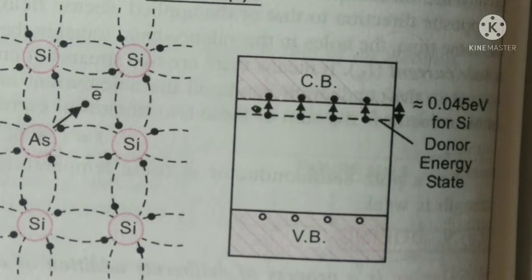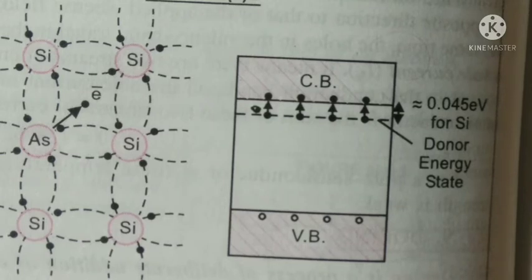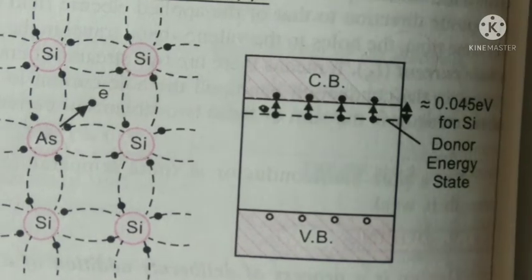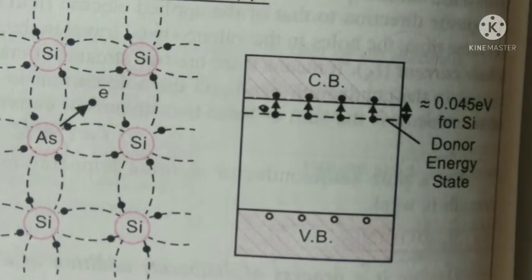The energy of these donor energy levels or states lies between valence band as well as conduction band but very close to conduction band. So a very small energy...